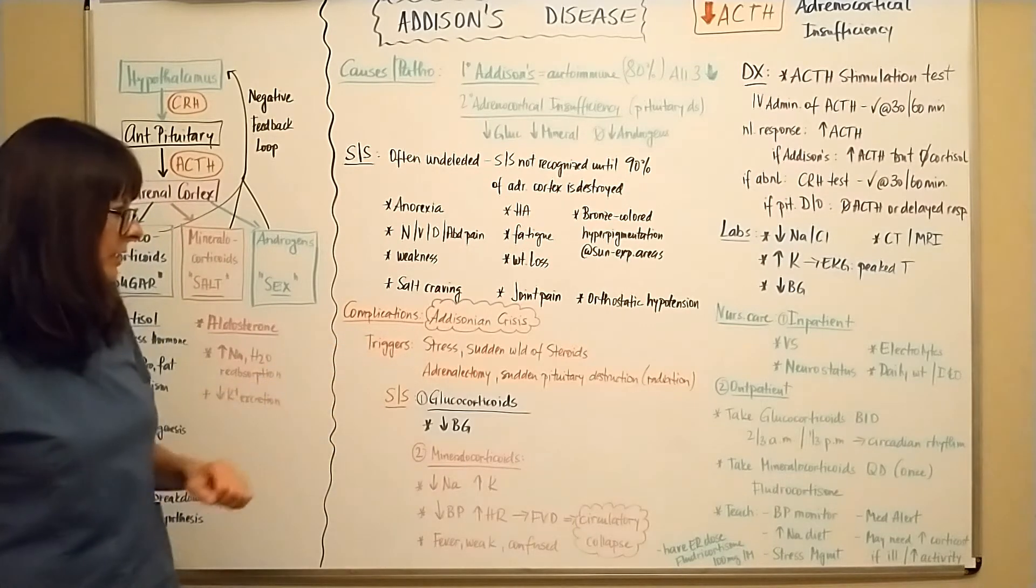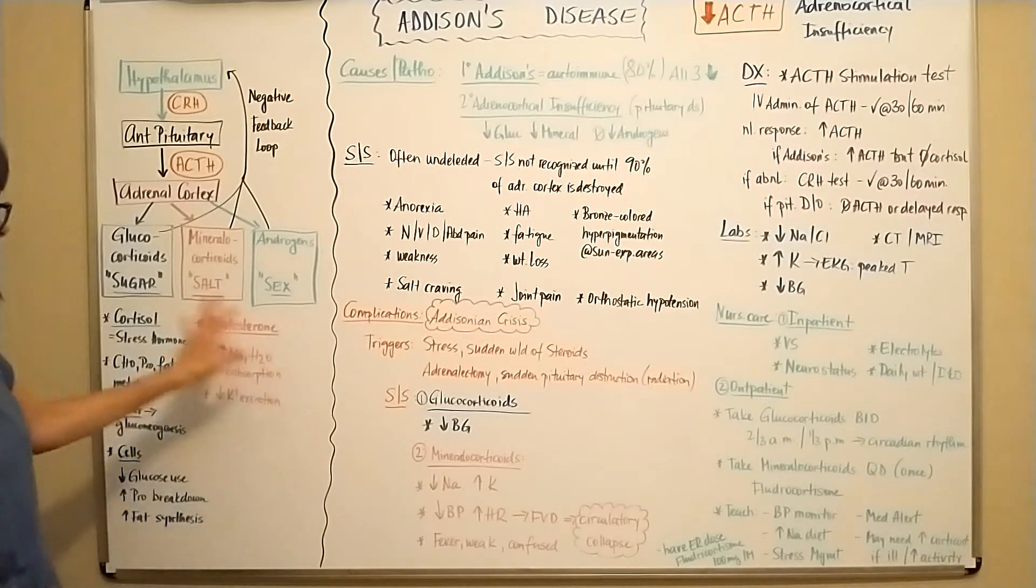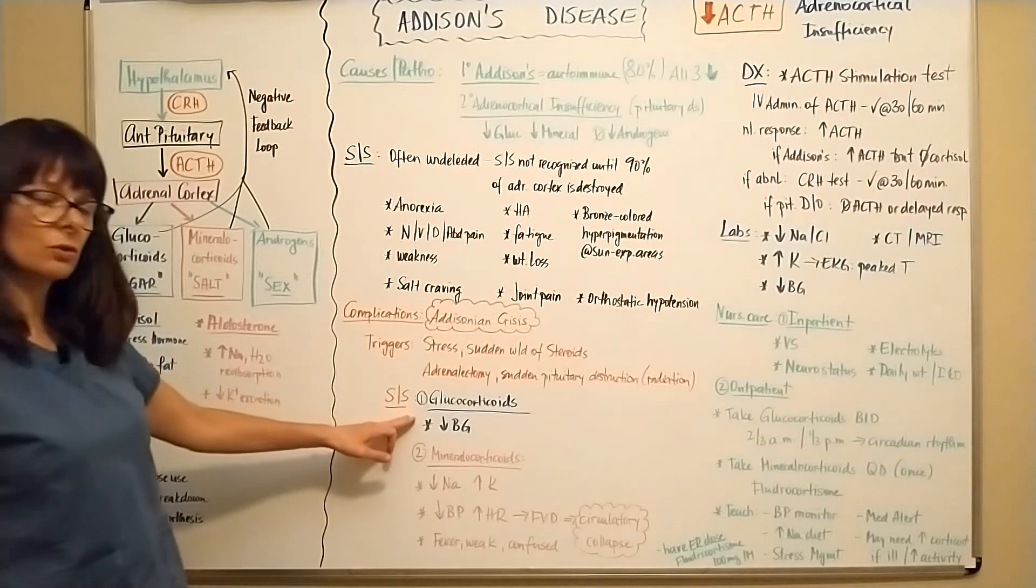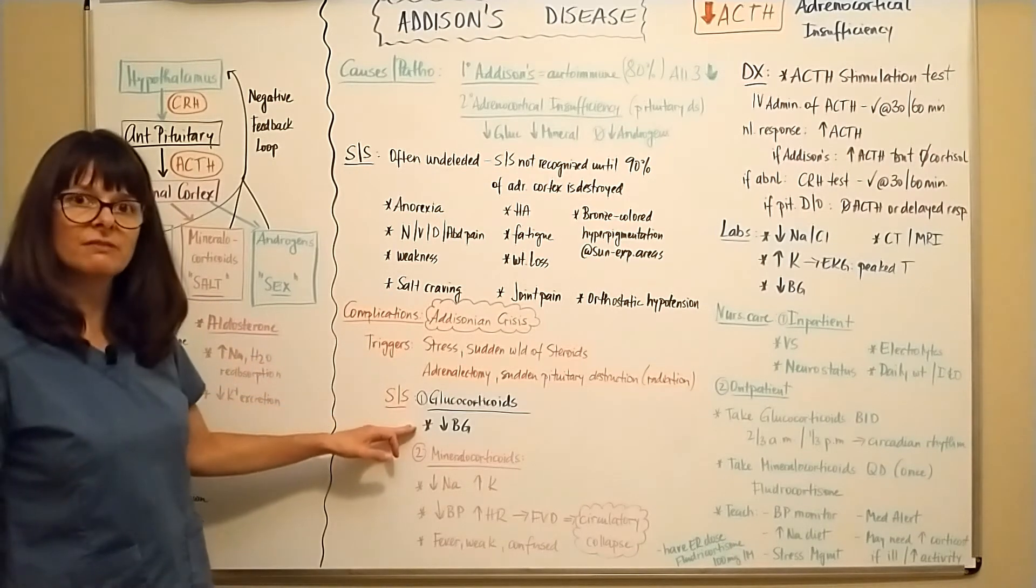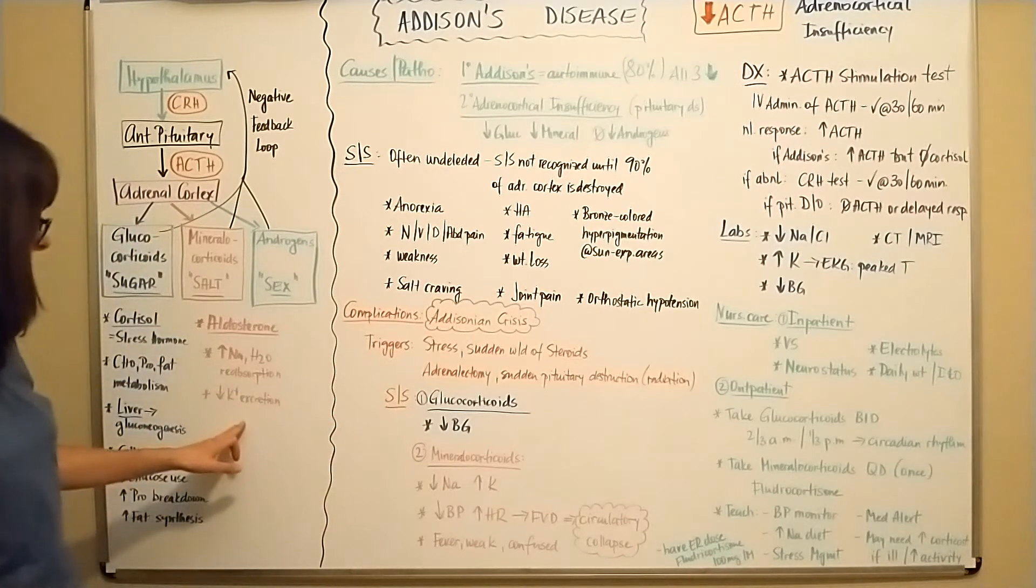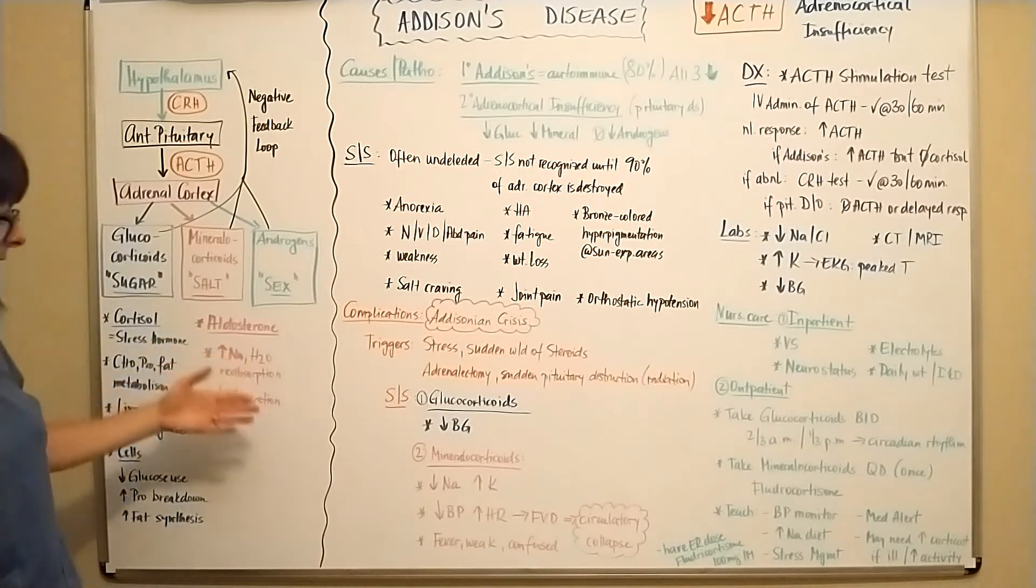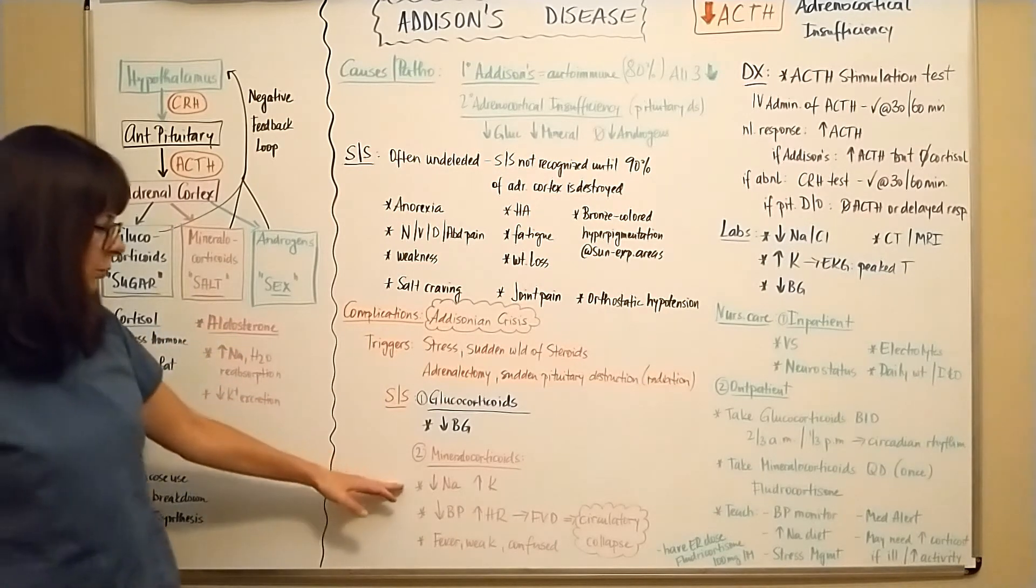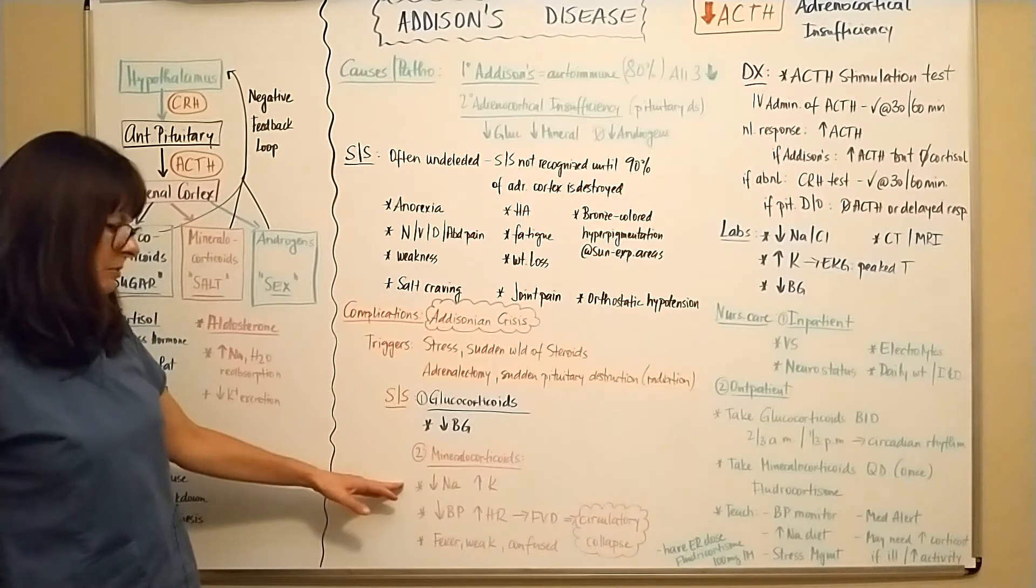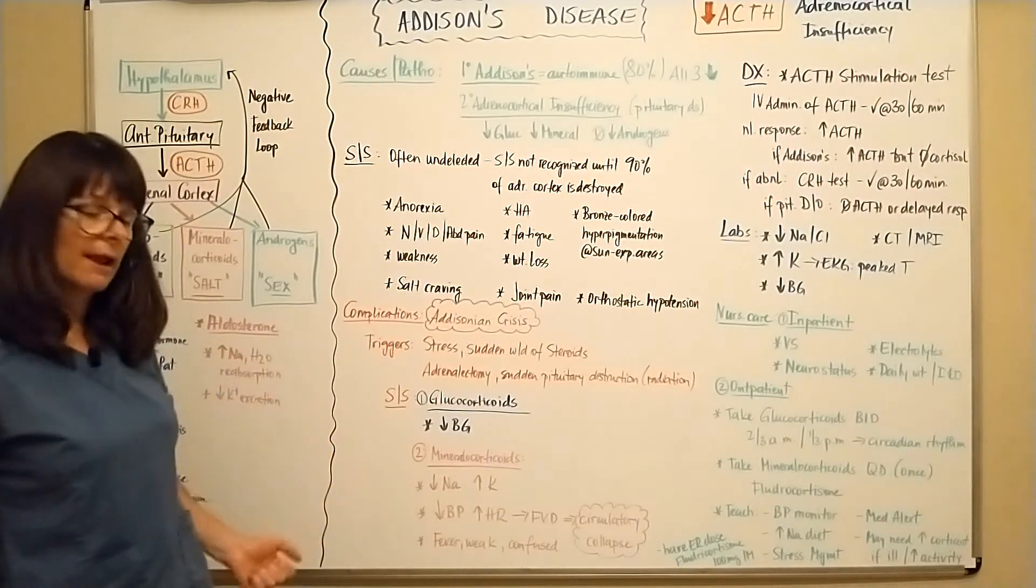Signs and symptoms of Addisonian crisis would basically be all of these hormones would be decreased. So now for our glucose glucocorticoids, the patient could suffer from hypoglycemia. For our mineralocorticoids here, so if we know that usually we reabsorb sodium and water, now this will lead to decreased sodium reabsorption, which then will lead to hyperkalemia, because these two always balance each other out.